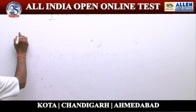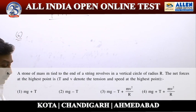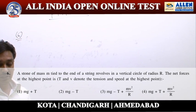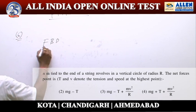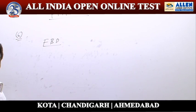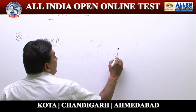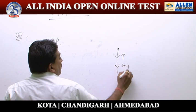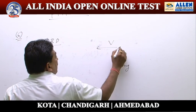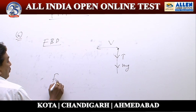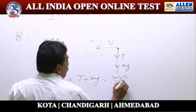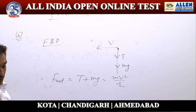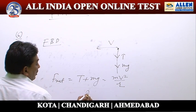Question number 6: a stone of mass M tied to the end of a string revolves in a vertical circle of radius R — the net force at the highest point is? Drawing the free body diagram at the topmost point, tension acts towards the centre and weight acts vertically downwards. Net force F-net equals T plus MG, which equals MV squared by R, so net force is T plus MG. Option 1 is the correct answer.